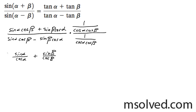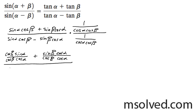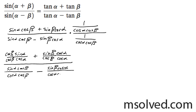Now let me show everything here. I'm going to distribute on the denominator, so I get sine alpha cosine beta over cosine alpha cosine beta minus sine beta cosine alpha over cosine alpha cosine beta.